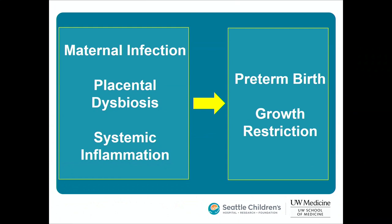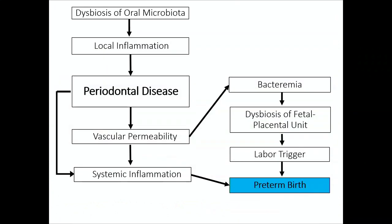Putting it all together: maternal infection, placental dysbiosis, and systemic inflammation are associated with preterm birth and growth restriction of the newborn. Dysbiosis of the oral microbiota is a key part of the pathway leading to periodontal disease, which leads to local inflammation, gum erosion, and tooth resorption.